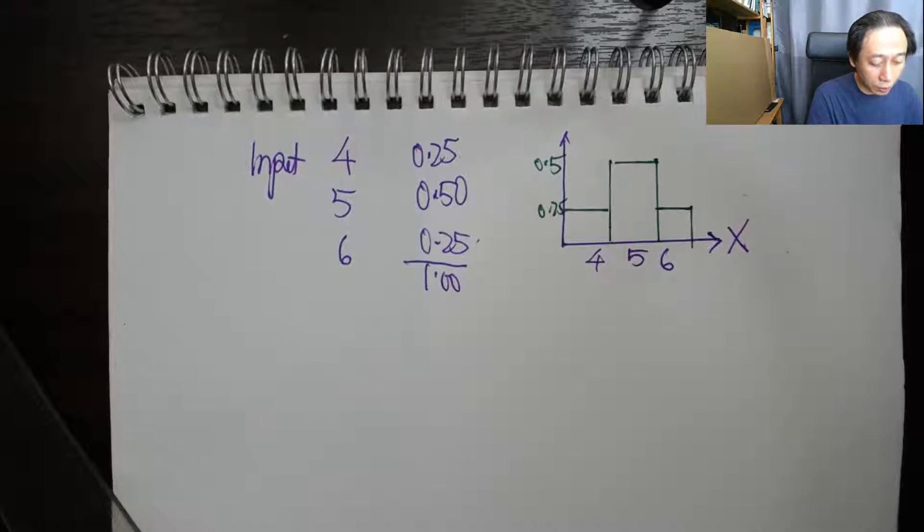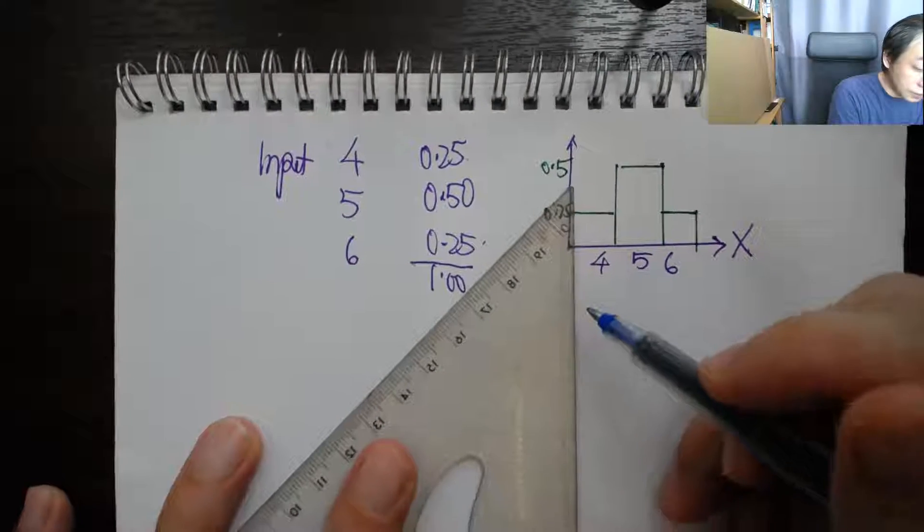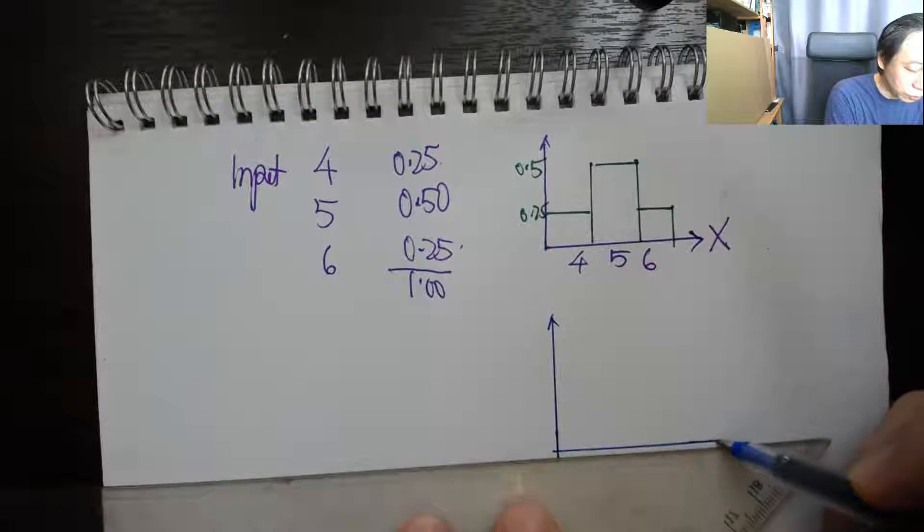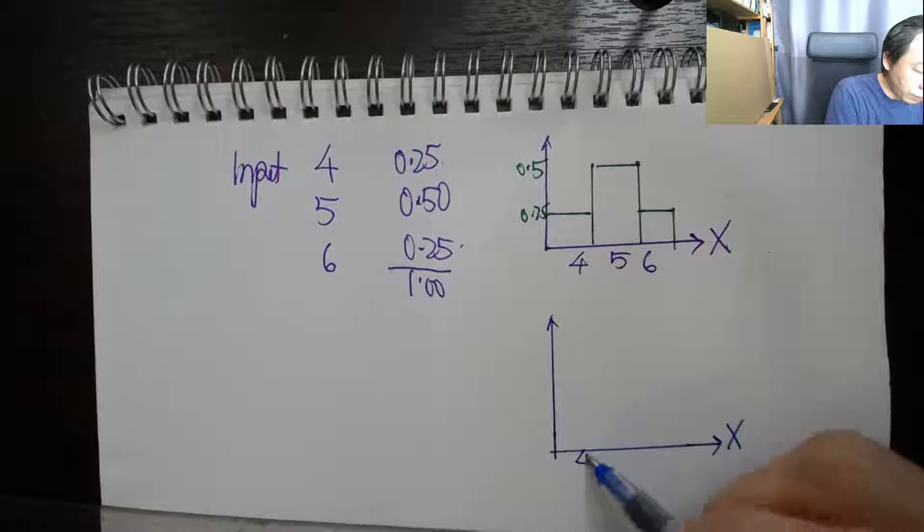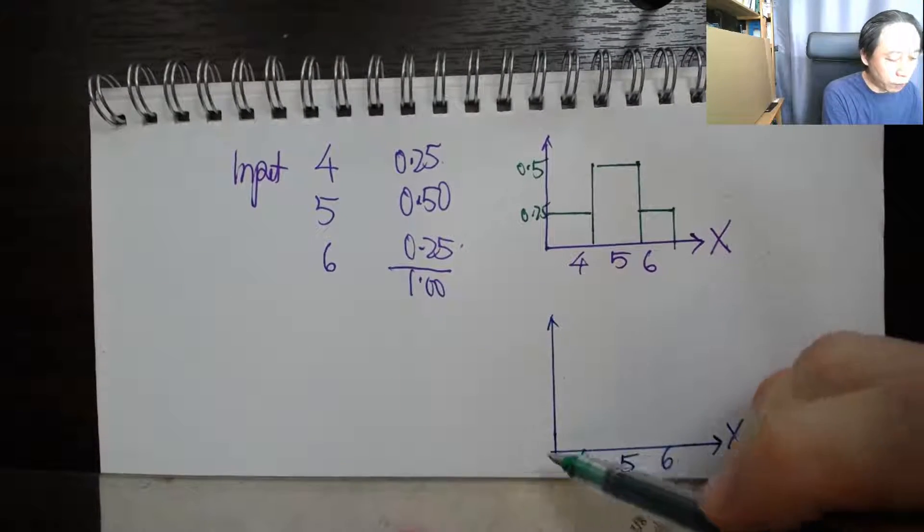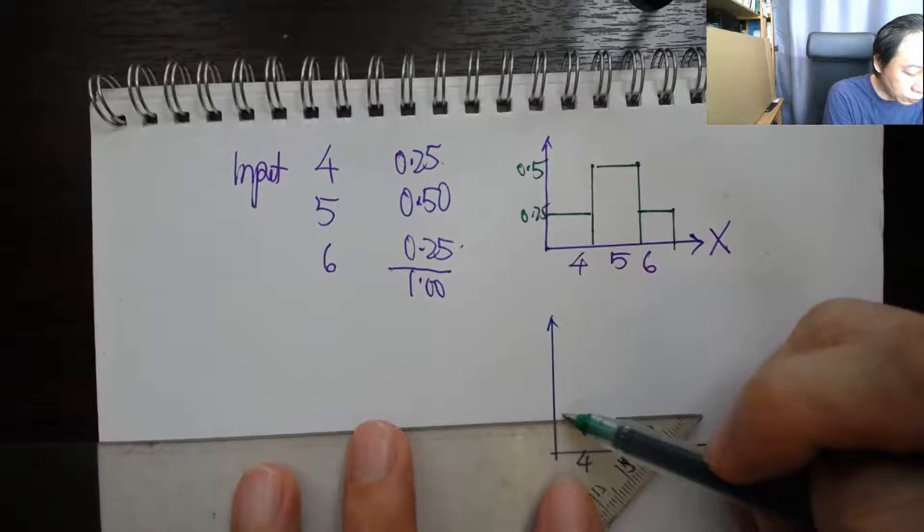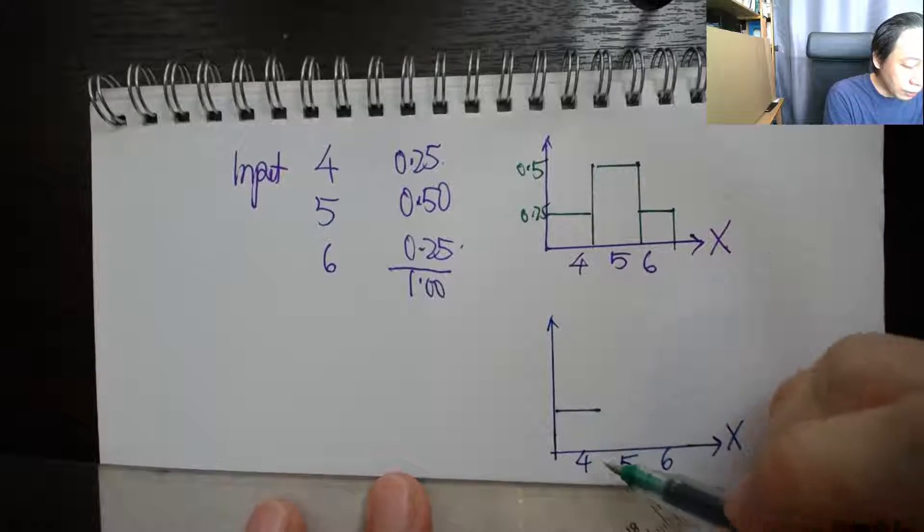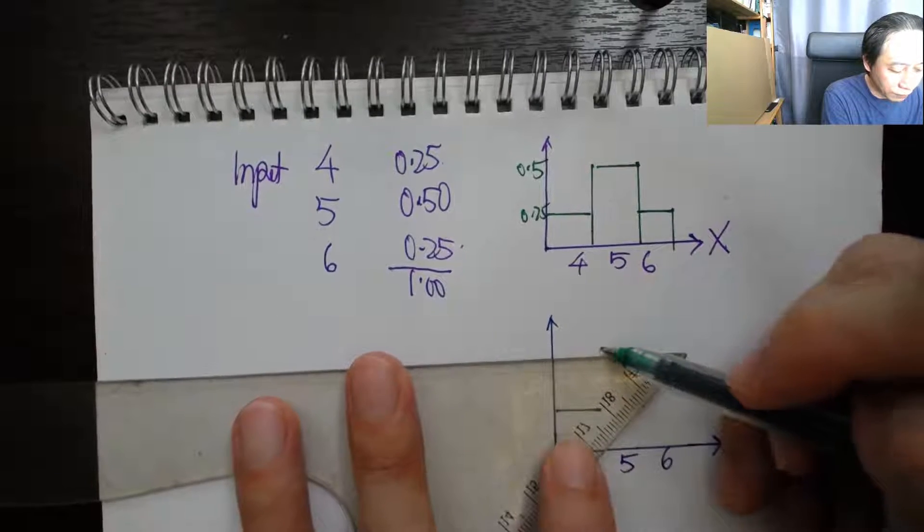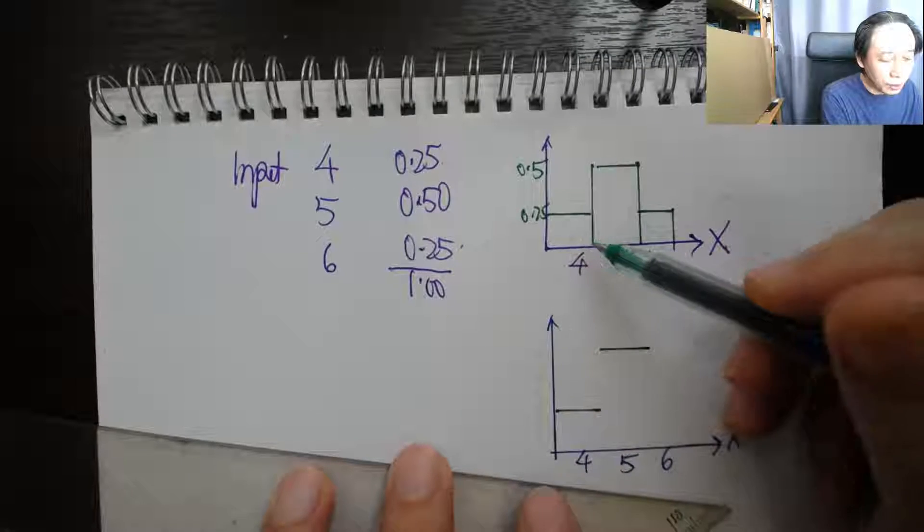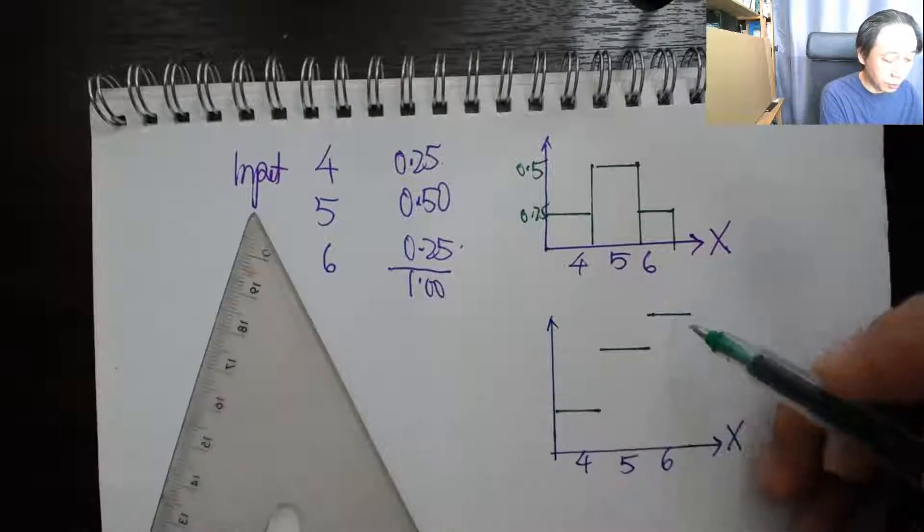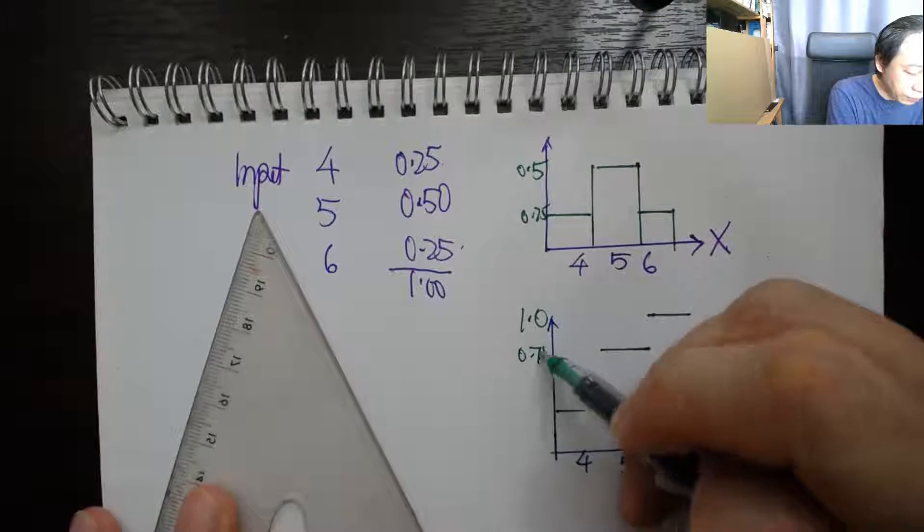We need to convert this into a CDF in the same way, almost the same way as we did in our continuous distribution function. So X again, and we have four, five, and six. We keep adding up the probabilities on the left. From minus infinity until four, including four, we get 0.25. Minus infinity until five, we get 0.25 plus 0.5, so we get 0.75. Minus infinity until six, we get of course one, and so we end here. This is one, this is 0.75, and this is 0.25.